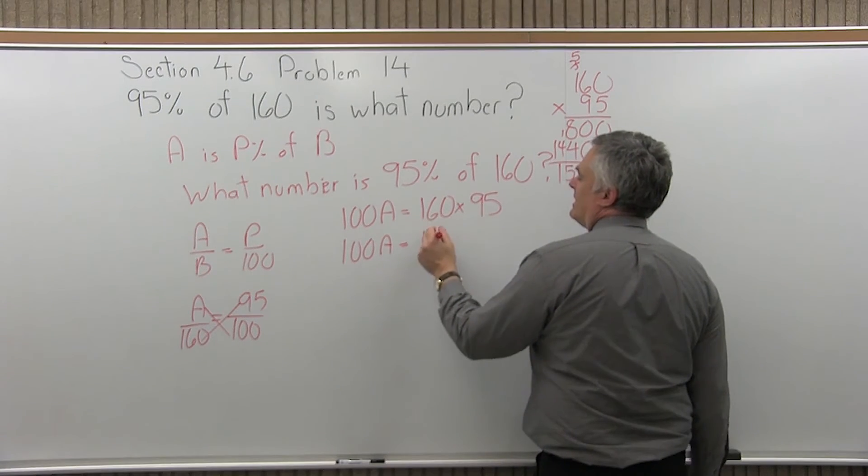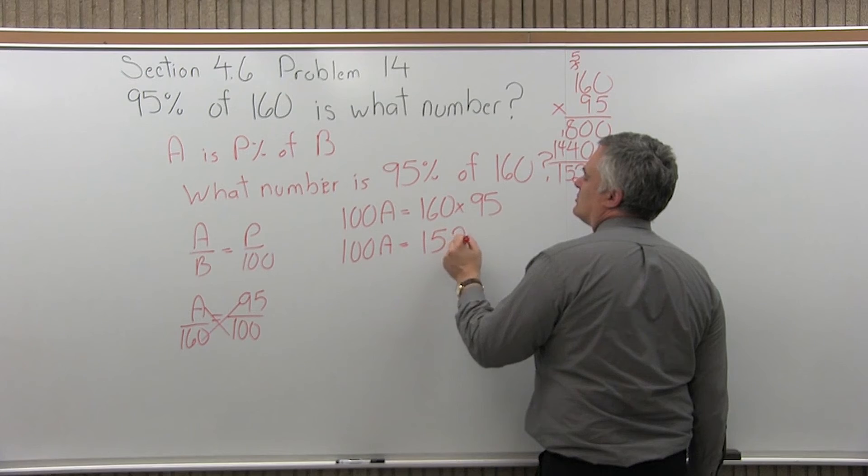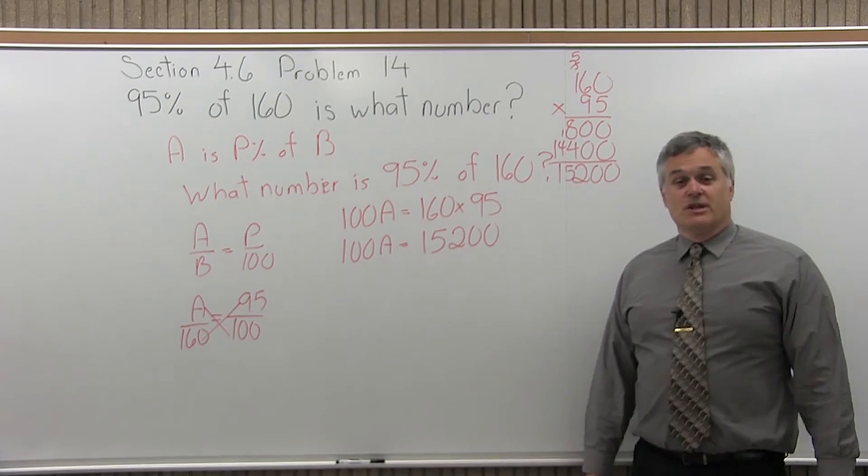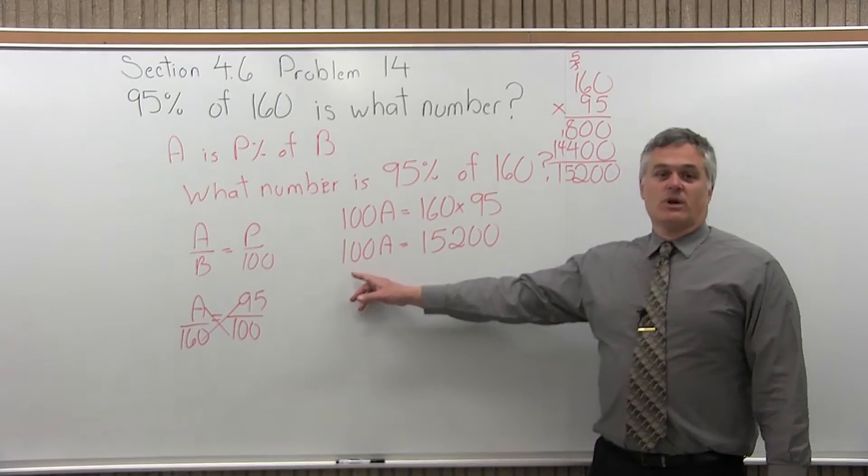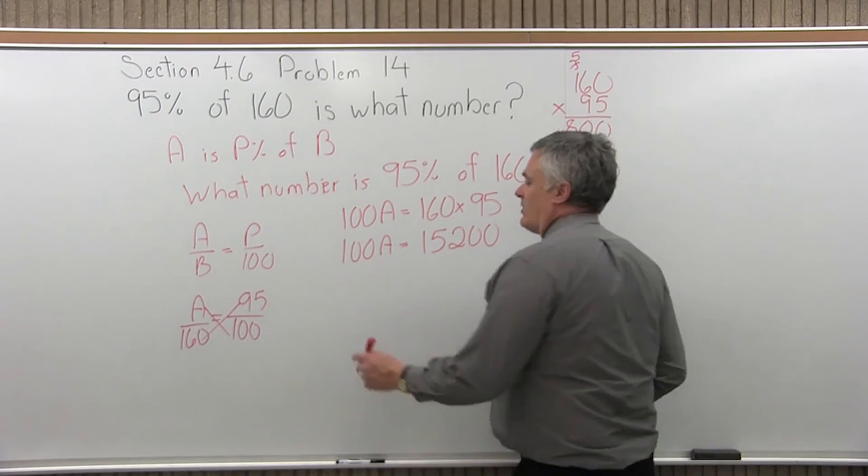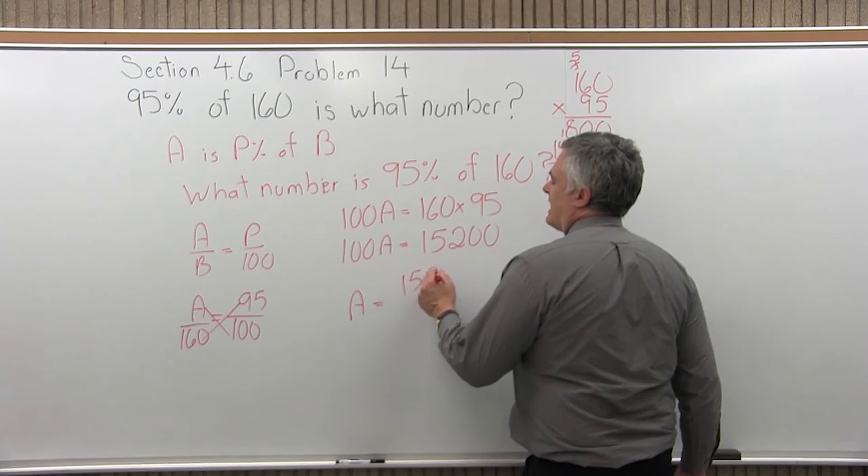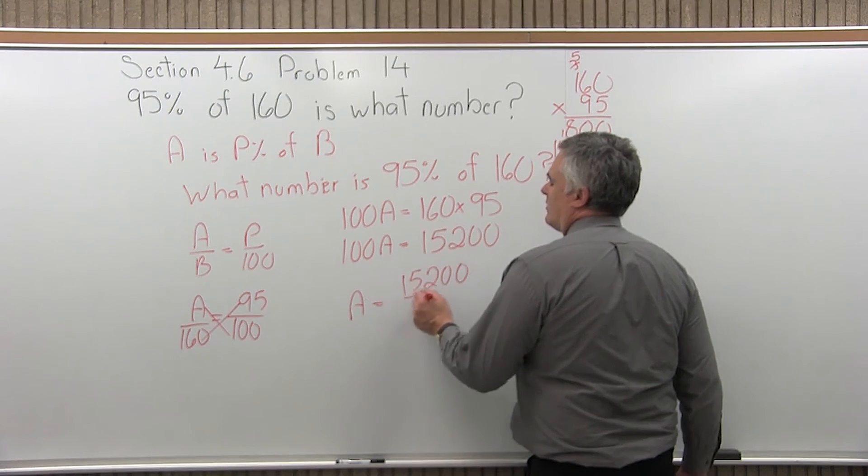So 100A equals 15,200. So we're not done yet. We want what A equals, not 100A equals. So we have to divide out the 100.